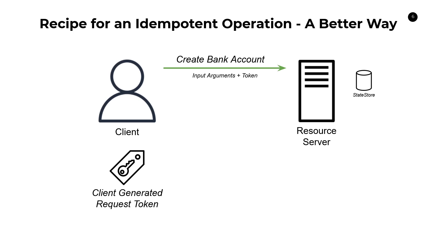The exact same flow works. The resource server will look at that token — if it's not there, they'll put it in the state store, service the request, and return success. If another request comes in due to a partial failure or retry scenario, it'll have the same token. You check the state store, it's already satisfied, and you return the exact same response back.